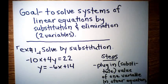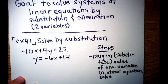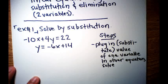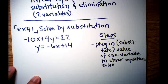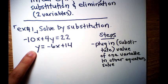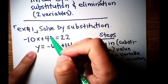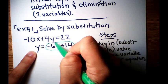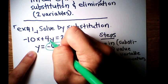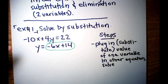Let's start with example number 1, solved by substitution. We've got −10x + 4y = 22, and y = −6x + 14. The step for example number 1 is to plug in or substitute the value of one variable into the other equation, and then solve for the other variable. In this case, one of our variables has already been solved: y = −6x + 14. So we're just going to plug it into the other equation.